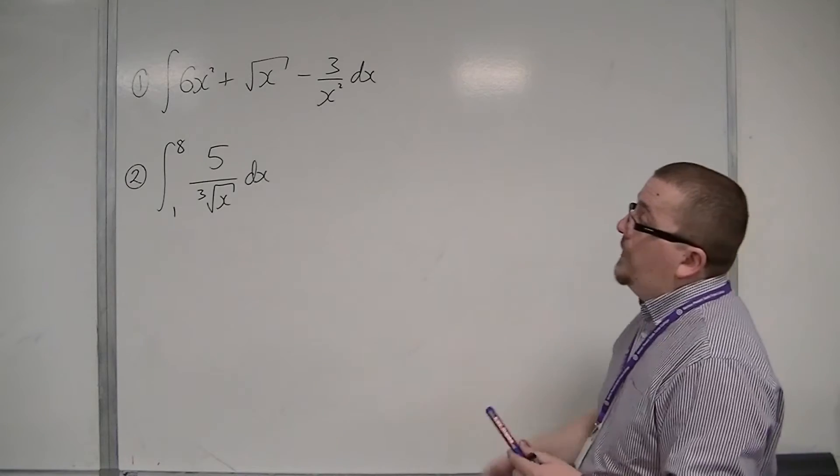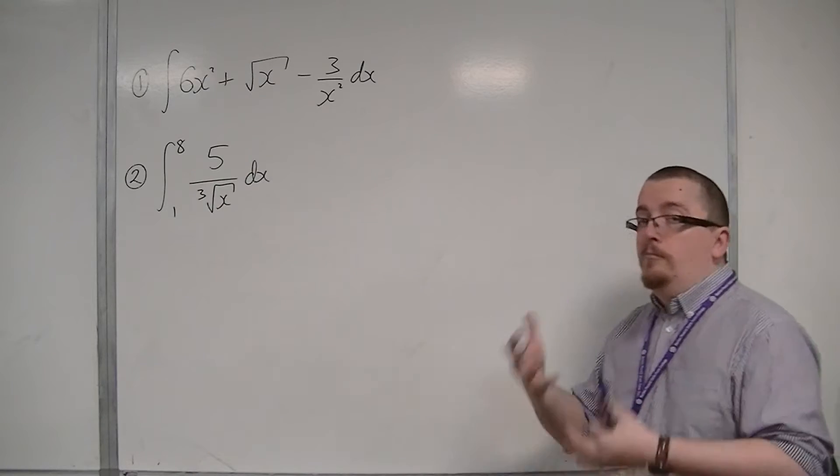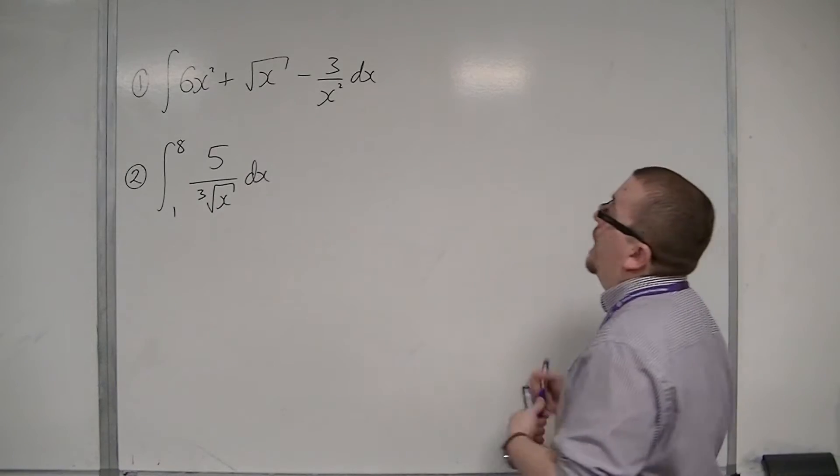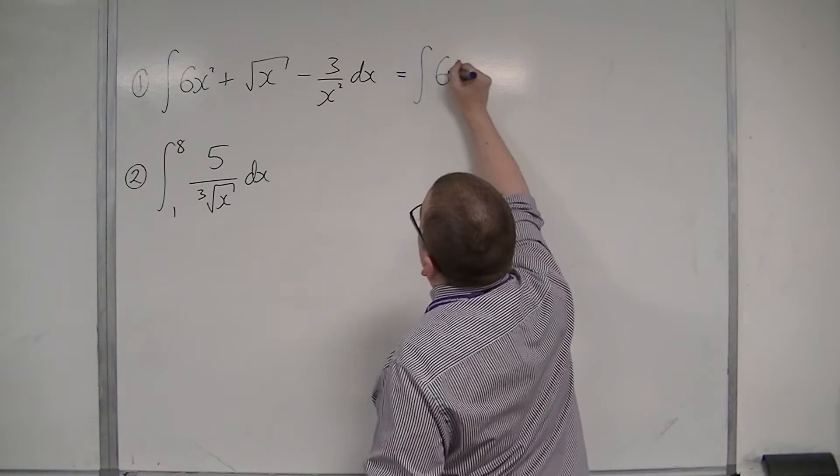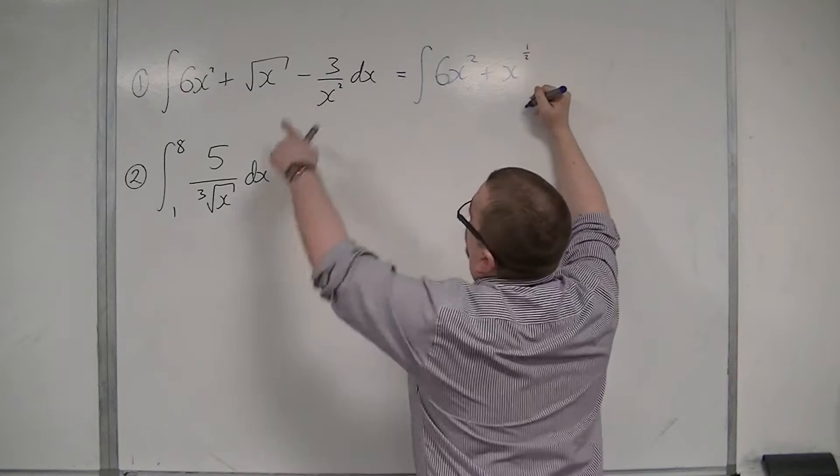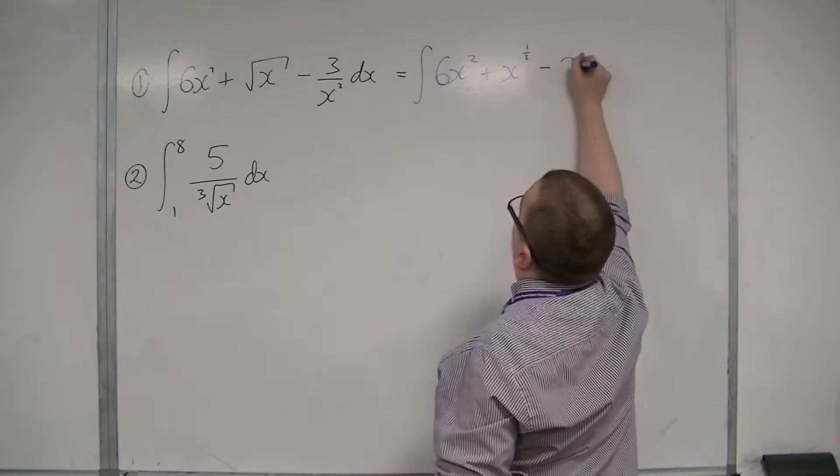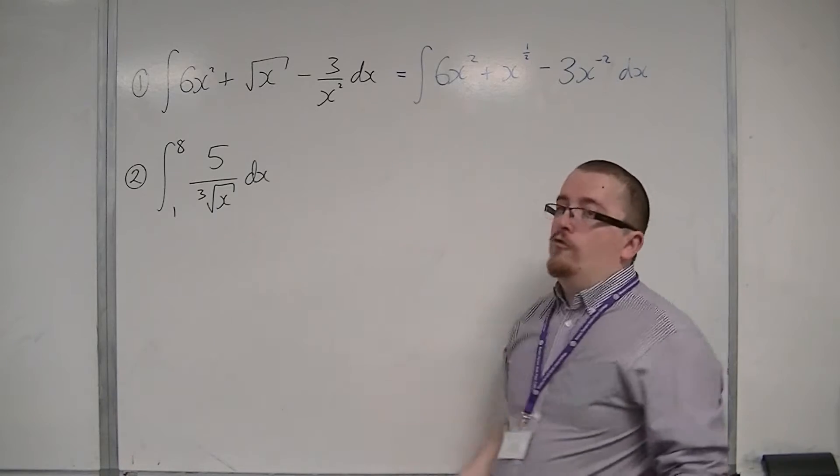The first thing to do is to write each element as x to the power of something. It's much easier to integrate it in that way. So I'm going to write this as the integral of 6x squared plus x to the power of a half rather than root x, take away 3x to the power of minus 2 rather than 3 over x squared.